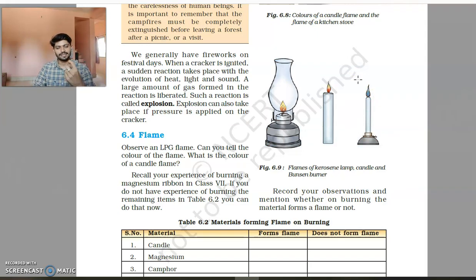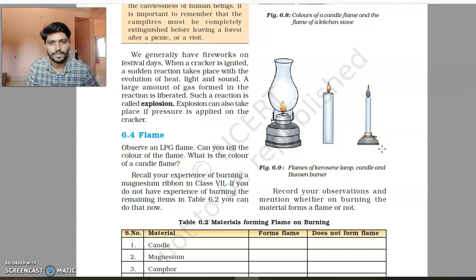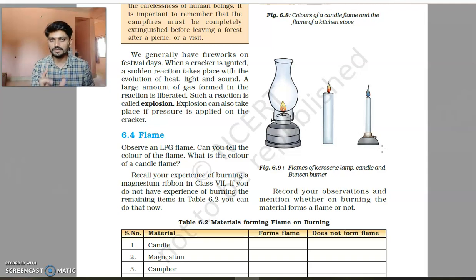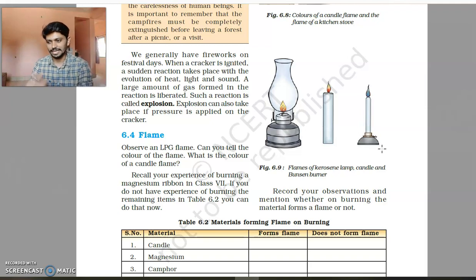The Bunsen burner uses a gas that contains a chemical called butane, and from that we get the name Bunsen burner. Butane burns very efficiently, which is why it produces a blue flame. When you get a flame that is yellow or red in color, it means the fuel is not burning as efficiently — there is not complete combustion, but only partial combustion.